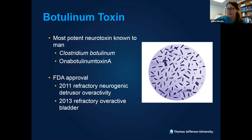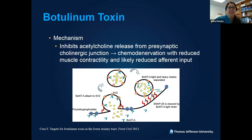Let's move on to botulinum toxin. It is the most potent neurotoxin known to man. There are various strains of Clostridium botulinum; the one we're most familiar with — Botox — is onabotulinum toxin A. FDA approval was granted in 2011 for refractory neurogenic overactive bladder activity, and subsequently in 2013 for refractory idiopathic overactive bladder — patients with urgency, frequency, and urgency incontinence. The mechanism is presynaptic inhibition of acetylcholine release, providing downstream detrusor denervation with reduction in muscle contractility and reduced afferent input.